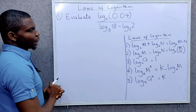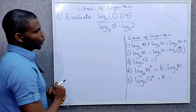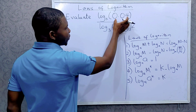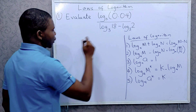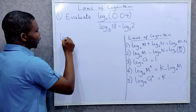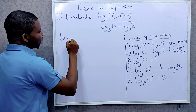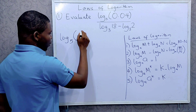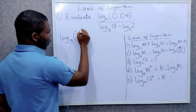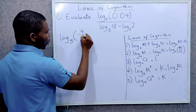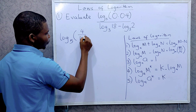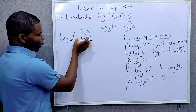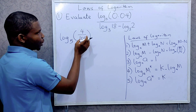The first thing I'm going to do to solve this is change the decimal to a fraction. Log base 5 of 0.04 — converting 0.04 to a fraction gives us 4 over 100.